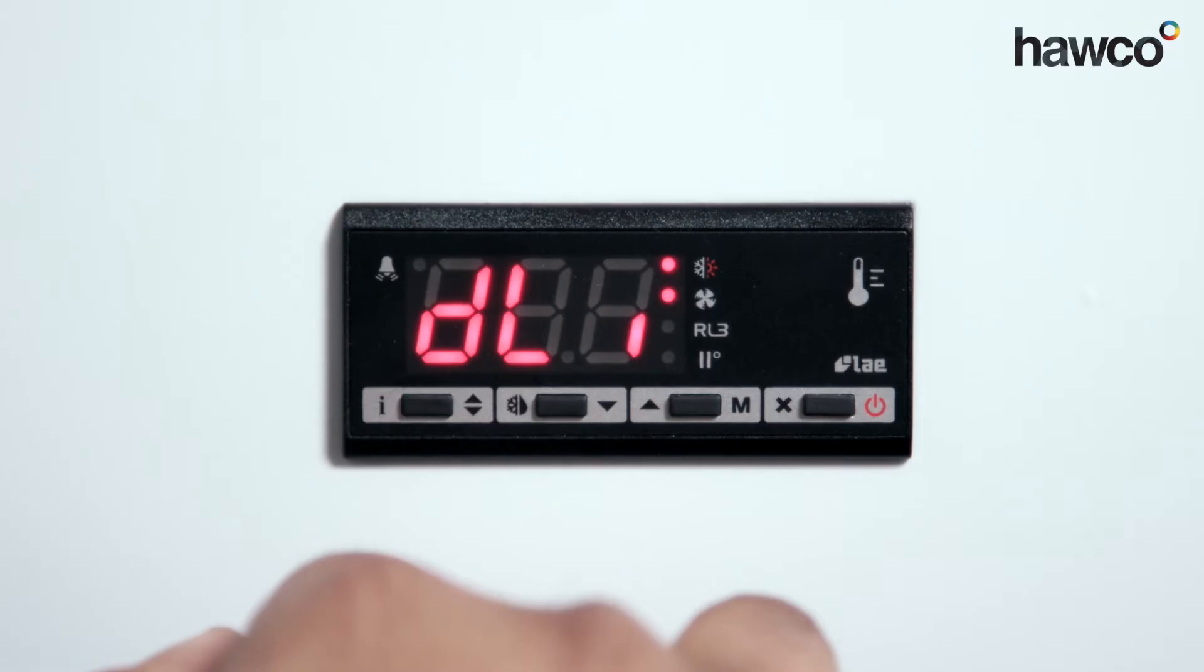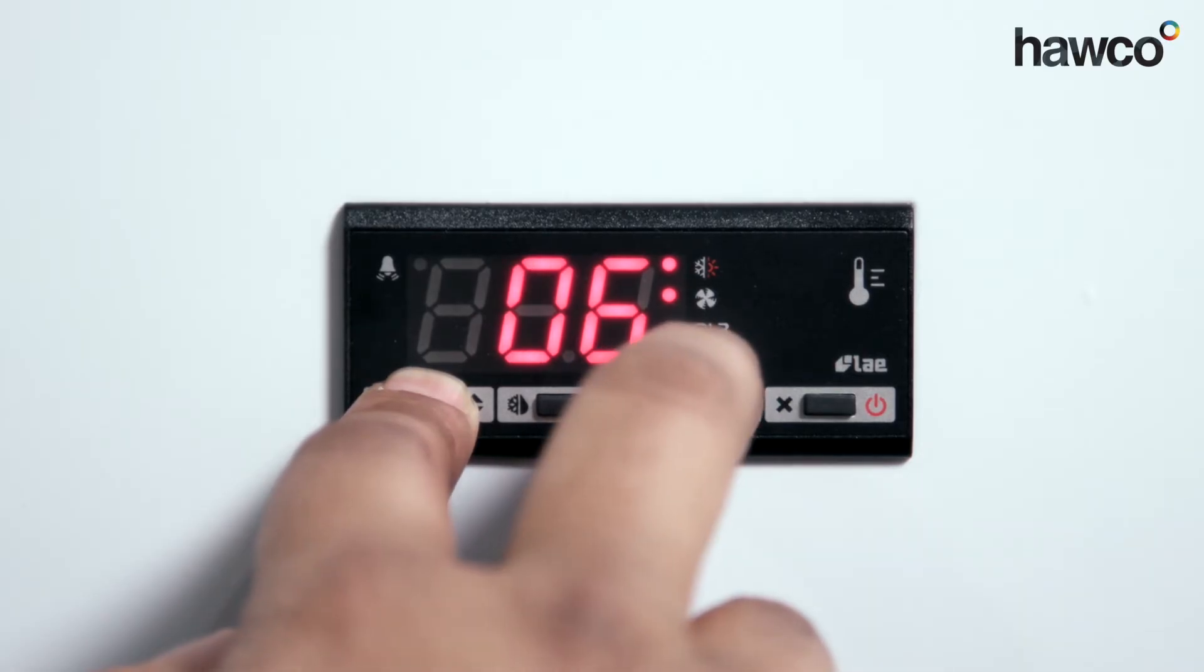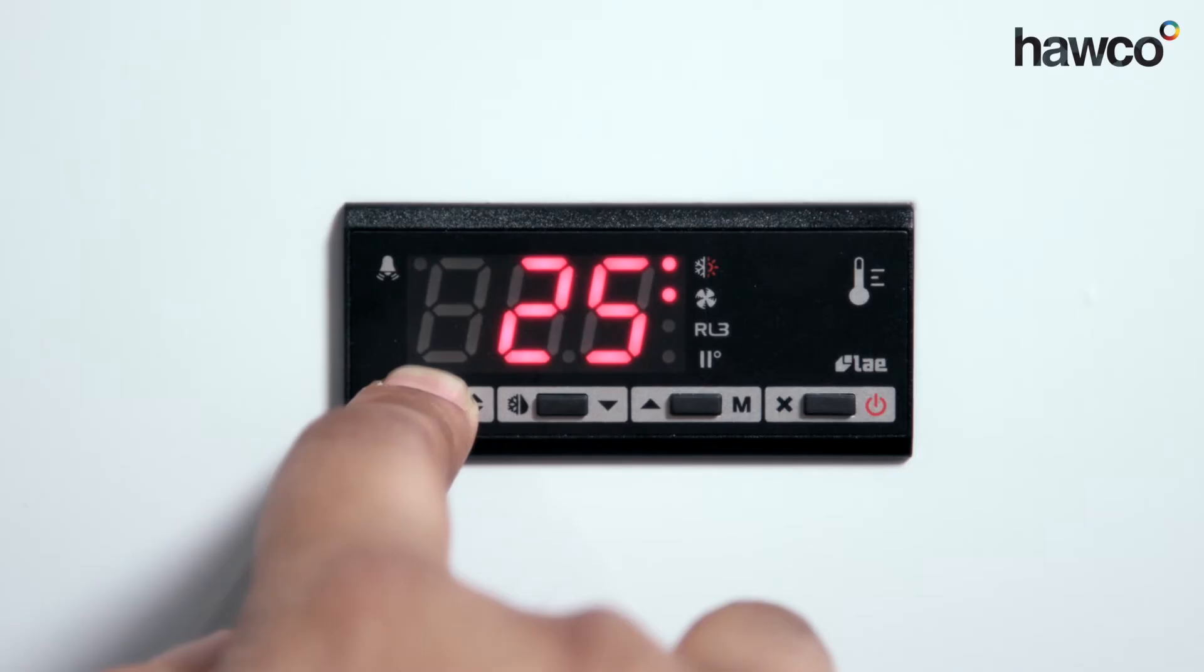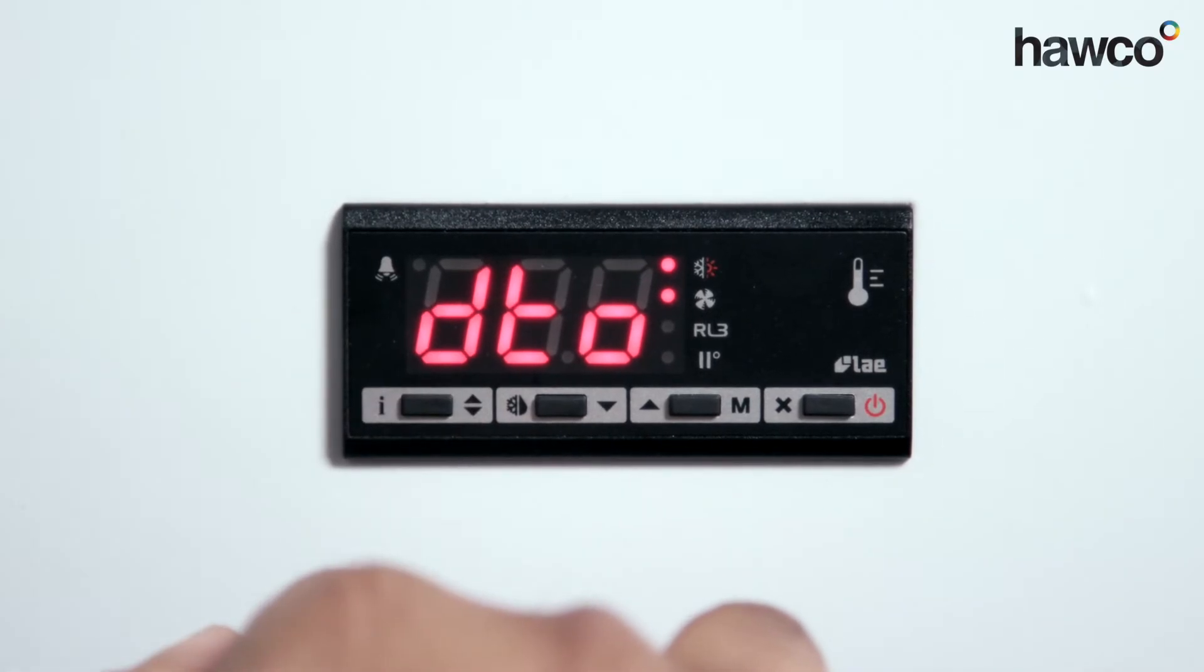DLI is defrost end temperature. Basically means when it hits 6 degrees, the defrost will cut out. Because our set point is at 20 degrees, I'm going to set this to 25 degrees. So when it hits 25 degrees on defrost, it turns off.